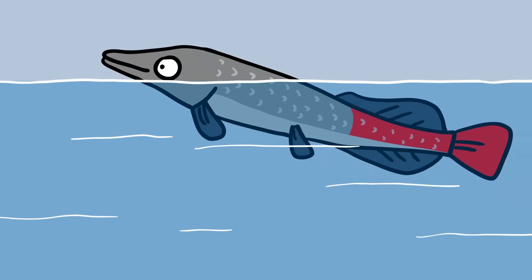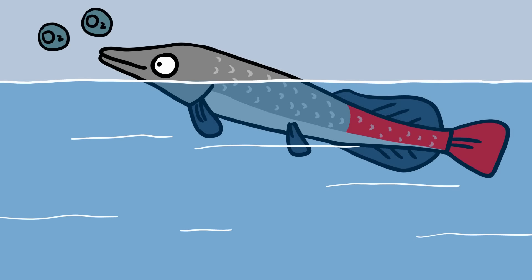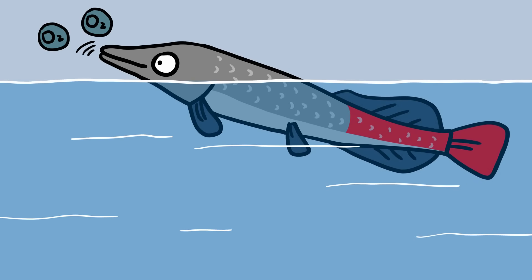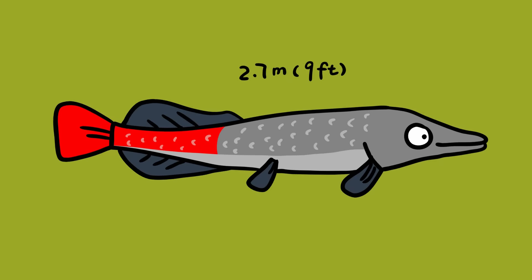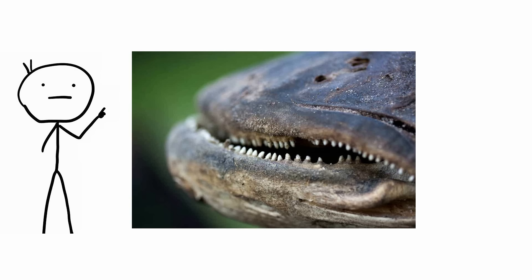Arapaima tend to stay close to the surface because they need to breathe surface air in addition to taking in oxygen through their gills and make a distinctive coughing sound when they emerge for air. They can reach 2.7 meters and weigh up to 90 kilograms. These fish are so vicious that even their tongue has teeth.